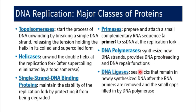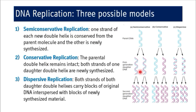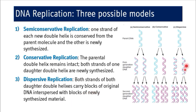There are three possible models of DNA replication: semi-conservative, conservative, and dispersive. In semi-conservative replication, one strand of each new double helix is conserved from the parent molecule and the other is newly synthesized. In conservative replication, the parental double helix remains intact and both strands of one daughter double helix are newly synthesized. In dispersive replication, both daughter double helices carry blocks of original DNA interspersed with blocks of newly synthesized material. In humans, it is semi-conservative replication.